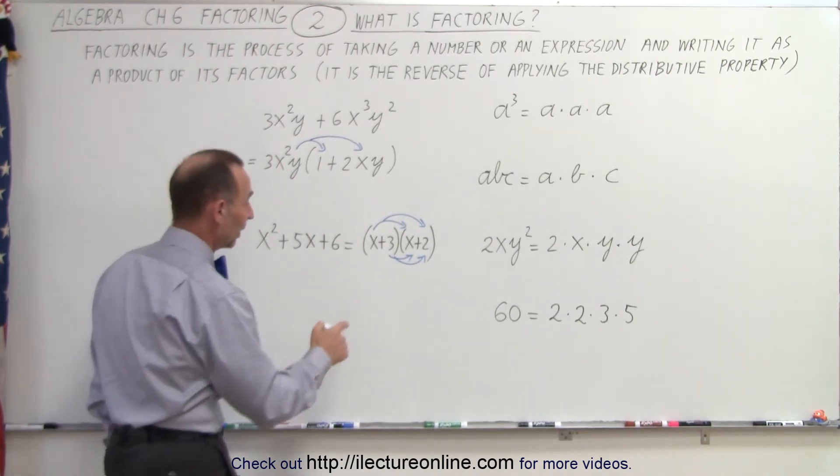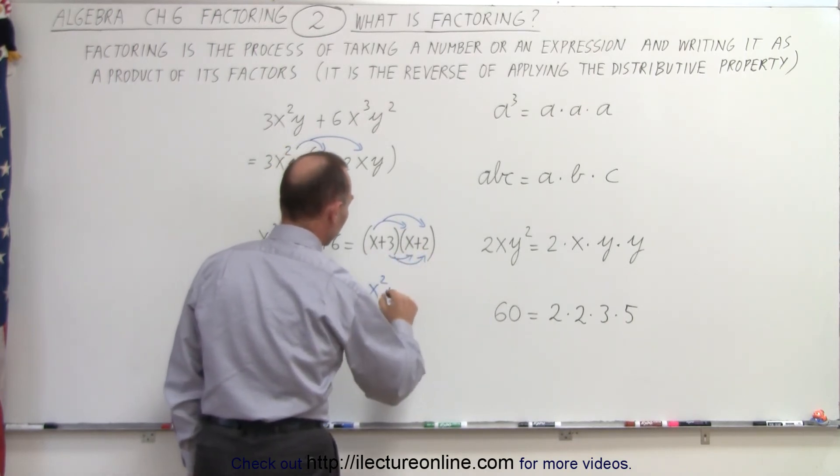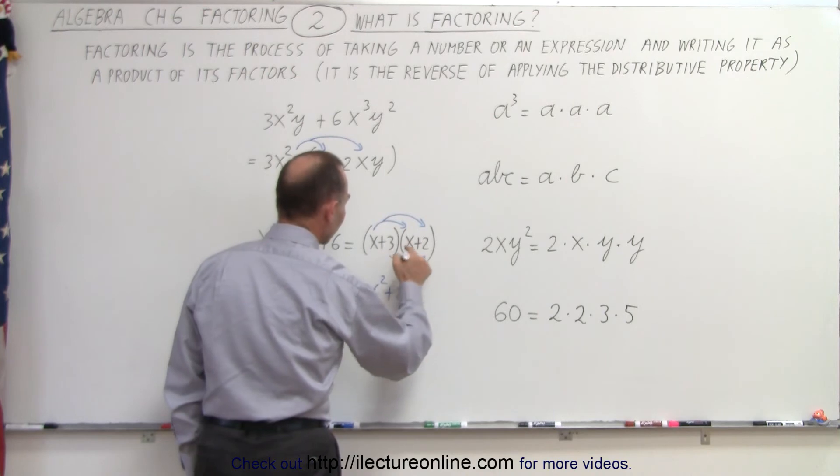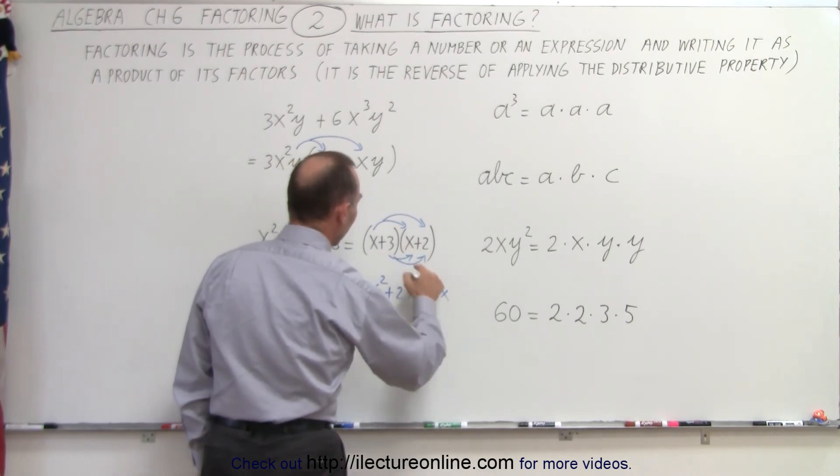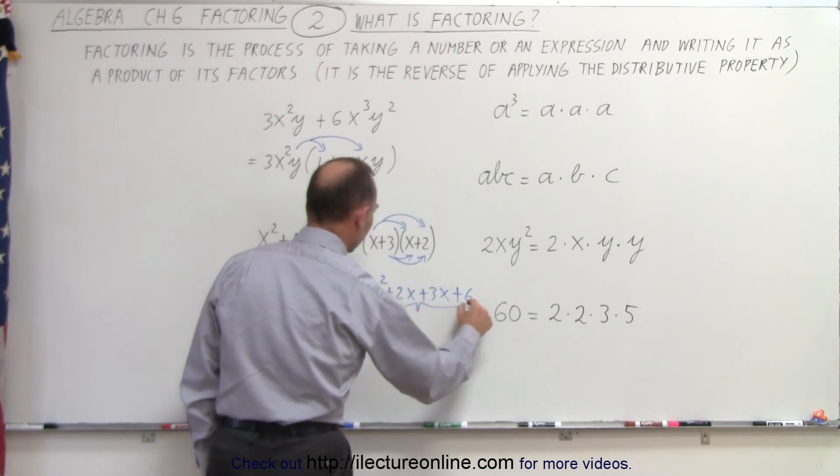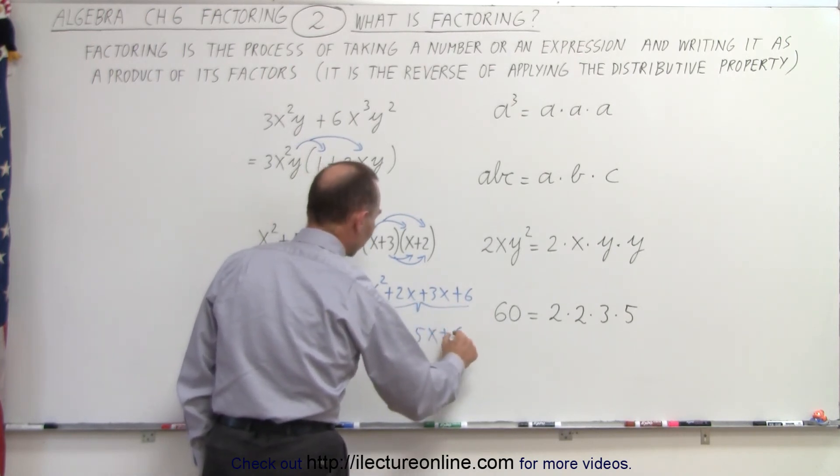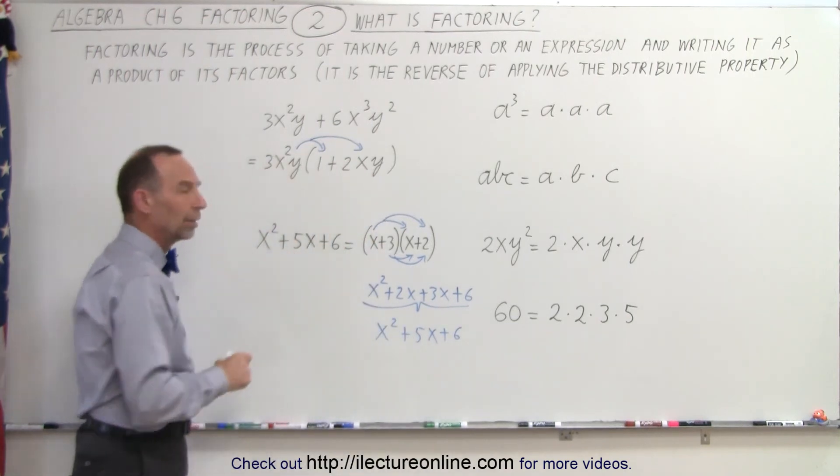Let's try it and see what happens. So x times x is x squared. x times 2 is plus 2x. 3 times x is plus 3x, and 3 times 2 is plus 6. If we then combine like terms, we get x squared plus 5x plus 6. And we get back what we started with.